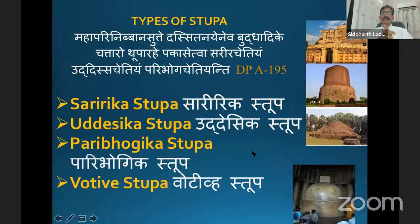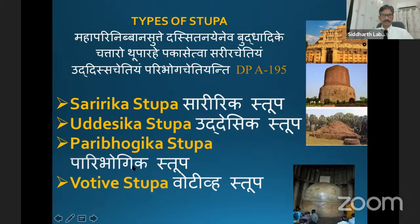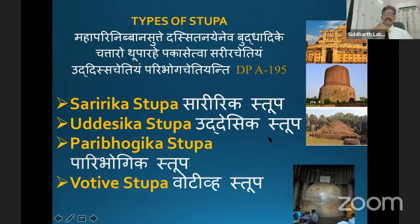Type of Stupa: in Dhammapada Atthakatha 195, here the Stupa and types of Stupa are explained, referring to the Mahaparinibbana Sutta. In Mahaparinibbana Sutta, Buddha explained this — Chattaro Tuparahe. He is telling about four types of Stupa. Number one is the Saririka Stupa, Udesika Stupa, then Paribhogika Stupa, and Votiva Stupa. What is Saririka Stupa? Where the Buddha's relics are placed or the Stupa is constructed on the Saririka — relics of the Buddha. Those Stupas are called the Saririka Stupa. The example is Sanchi Stupa — constructed on the Saririka Datu of the Buddha. Then comes the Udesika Stupa: the name indicates commemoration — where a very, very important episode has happened. At such places the Udesika Stupa is constructed.